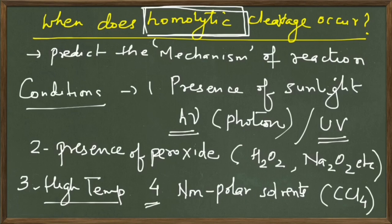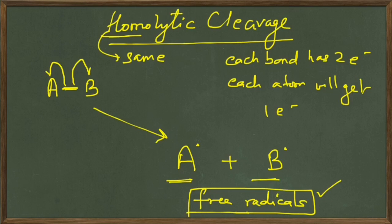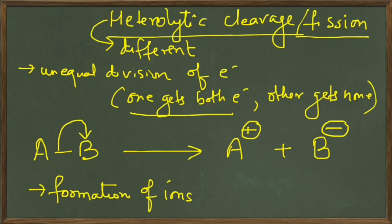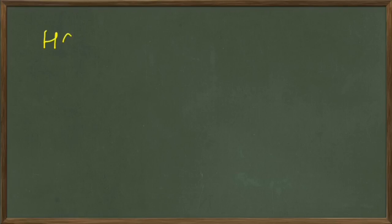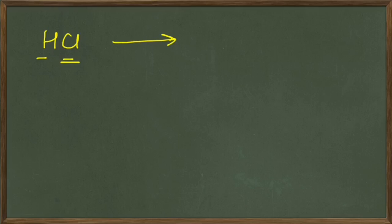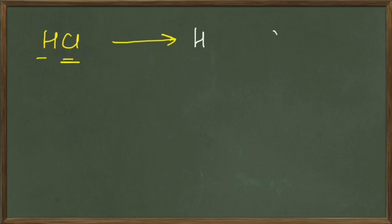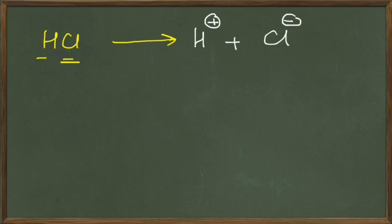If you remember, homolytic cleavage led to the formation of free radicals, but heterolytic cleavage leads to the formation of ions. The ion with a positive charge is called a cation, and that with a negative charge is called an anion. For example, if we have HCl and break this bond heterolytically, Cl is more electronegative so it takes up both the electrons. We end up with H⁺ and Cl⁻ — two ions.